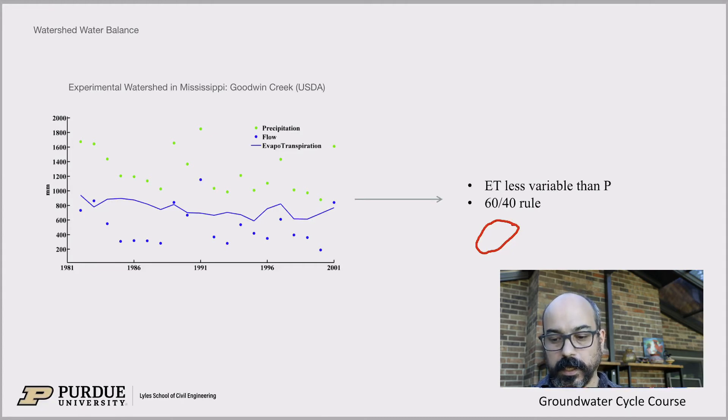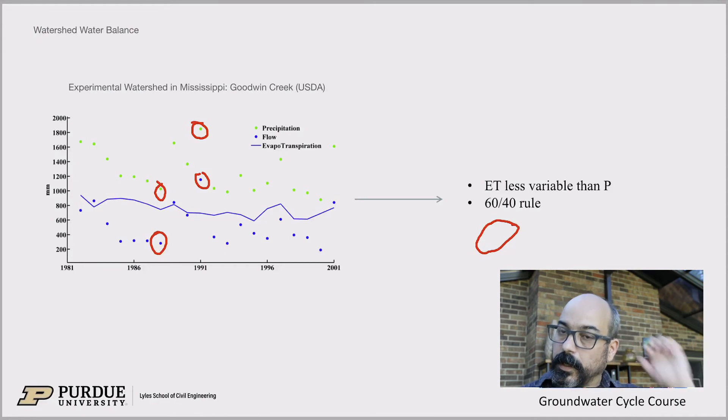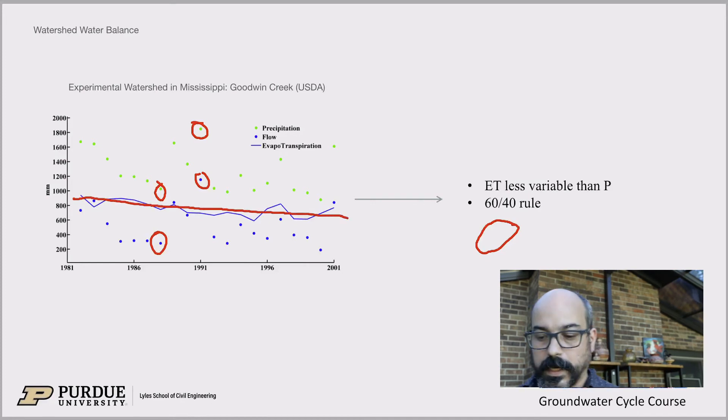And if you take the difference, you get that solid line, which is again, presumably assuming no change in storage much, the evapotranspiration. And a couple of things to note here. One is that the precipitation is quite variable, obviously. There's wet years and dry and that's how it is. And you can see that the discharge tracks the precipitation, meaning that if you have excess rain, typically you have excess runoff.